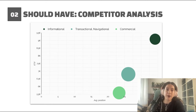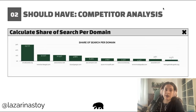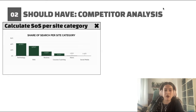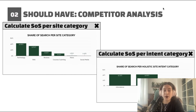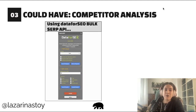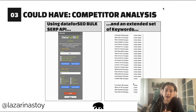After that, we want to calculate the share of search per domain — a simple calculation I'll link an article about. It's very easy to do in Data Studio. With the different categorizations now in place, we can also calculate share of search per site category and share of search per intent category.